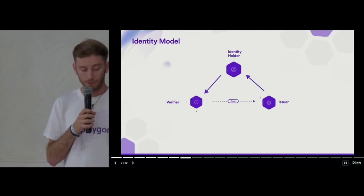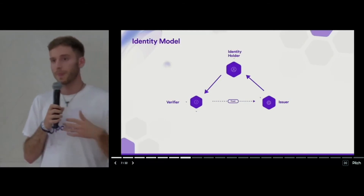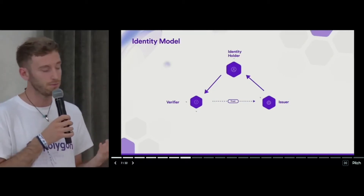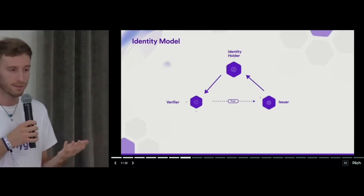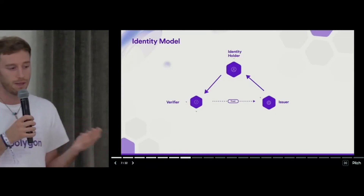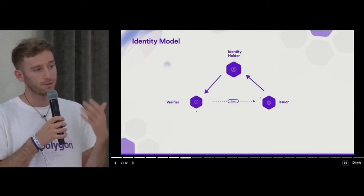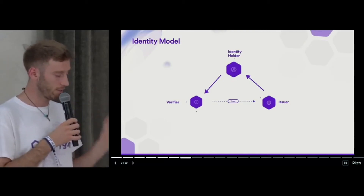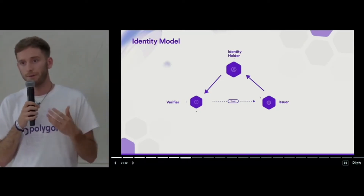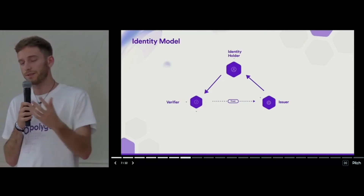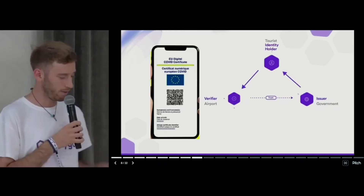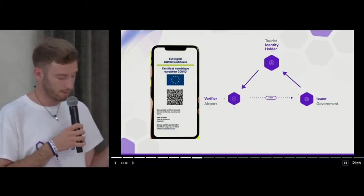There are three actors involved. There's an issuer, which is someone that says something about you. There's you, as an identity holder. And there's a verifier, which is basically every actor that wants to know something about you. And of course there must be trust between the verifier and the issuer. As a verifier, I need to check information issued by someone that I trust.